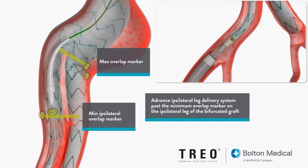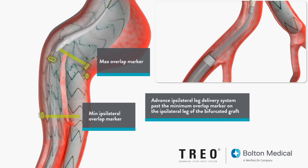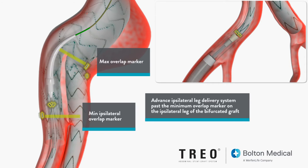The ipsilateral leg of the main body has a single marker that indicates the minimum overlap. The maximum overlap marker is the same marker as used on the contralateral side. The proximal end of the leg extension must be advanced so that it is between these two markers, while ensuring that the distal leg marker position is at the desired location.